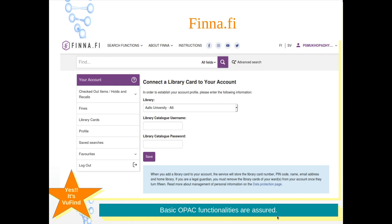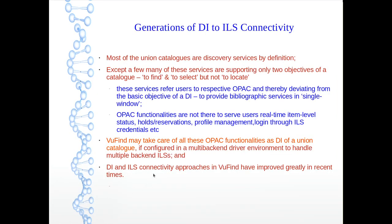Basic OPAC functionalities are achieved here — and yes, it is VuFind, as all VuFinders know very well. As a whole we can conclude that most union catalogs support only two functions: to find and to select — but neglect the third function, which is to locate. VuFind may take care of all these OPAC functionalities as discovery interface of a union catalog if configured in a multi-backend driver environment to handle multiple back-end ILS, and DI-to-ILS connectivity approaches in VuFind have improved greatly in recent times.